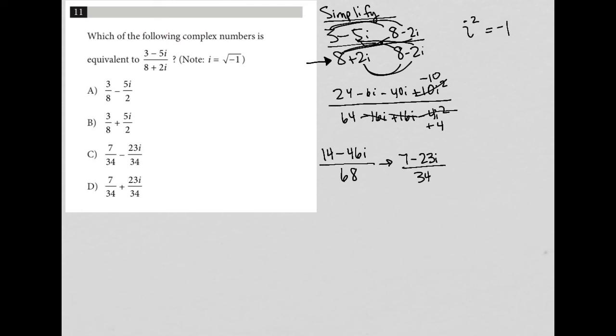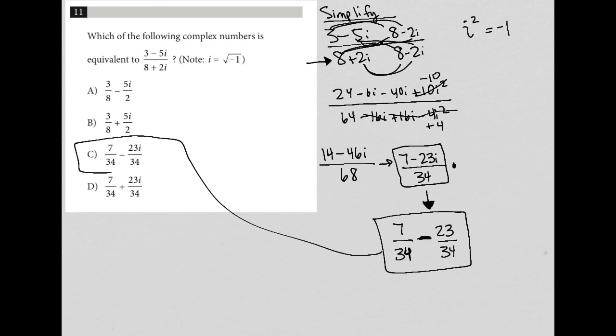So then I look at my answer choices. The first thing I notice is that I got an answer that is a single fraction, whereas all of my answer choices are separate fractions, two fractions. So how do I turn my single fraction into two separate fractions? Well, it's really the reverse of adding, subtracting fractions, which says as long as you have the same or common denominator, you can combine the numerators. So the opposite of that is I take my denominator and separate it out, and I separate my numerators. So this fraction here is the same as these two, which gives me an answer of choice C.